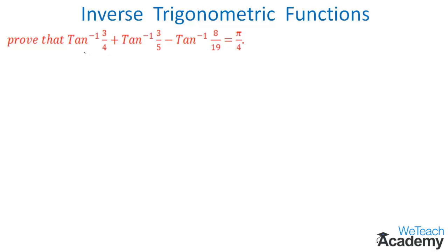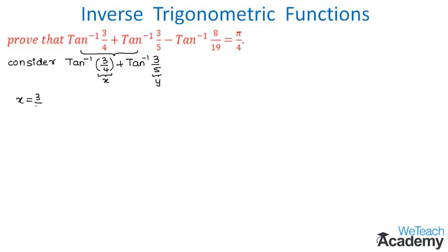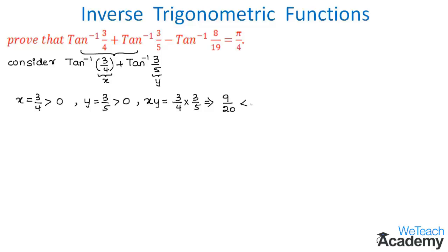To prove this, let us first consider the first two terms: tan inverse 3/4 plus tan inverse 3/5. Assuming x = 3/4 and y = 3/5, both x and y are greater than 0. Now let us check x times y: multiplying 3/4 by 3/5 gives 9/20, which is less than 1.